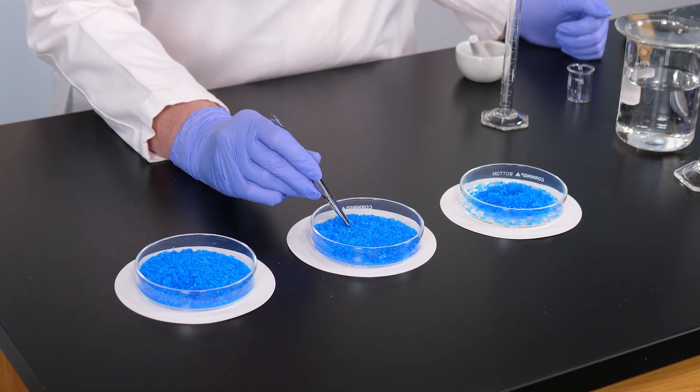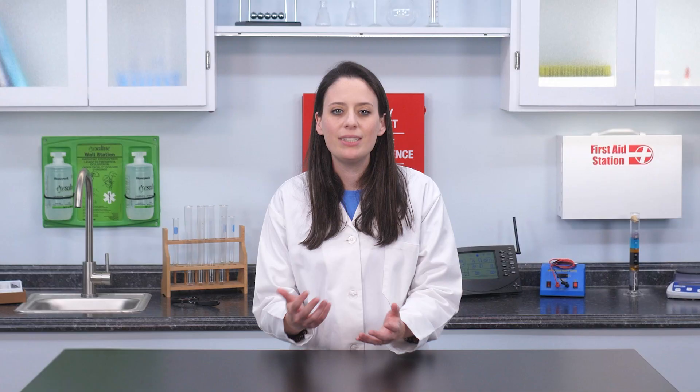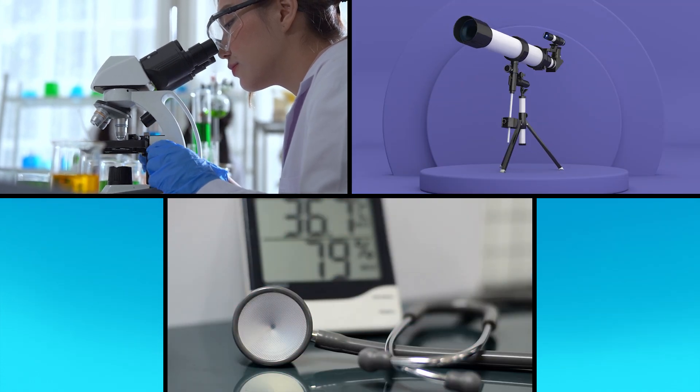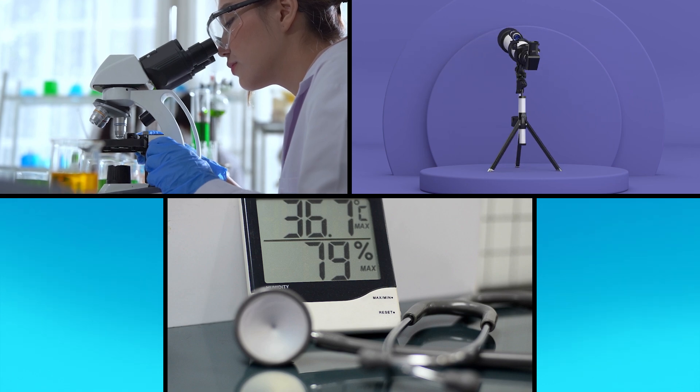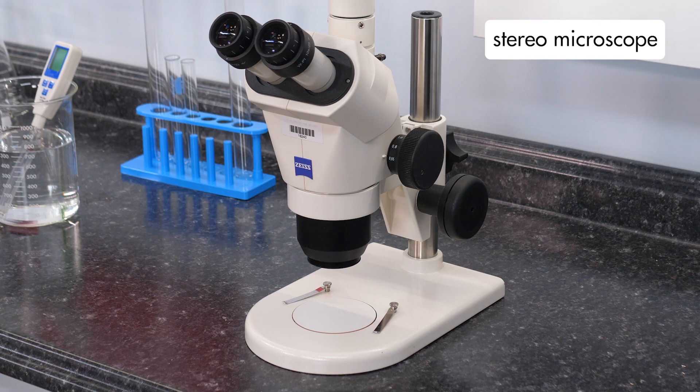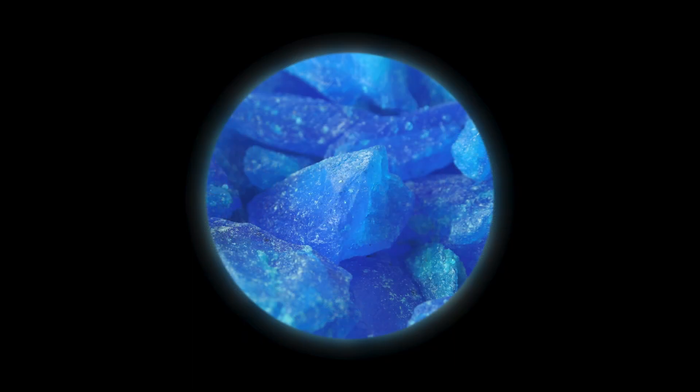Observation involves things we personally observe. Scientists often use tools, such as microscopes, telescopes, stethoscopes, and thermometers, to make observations. Let's use our stereomicroscope to examine the crystals more closely. Upon close inspection, we observe that this substance consists of hard, blue crystals.